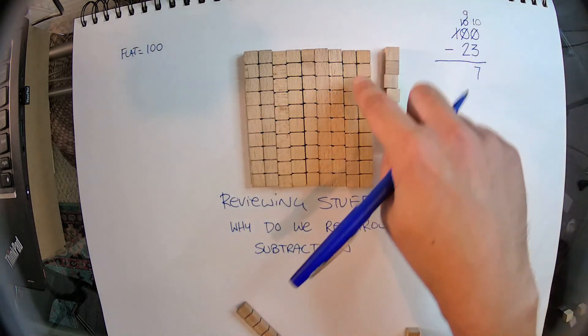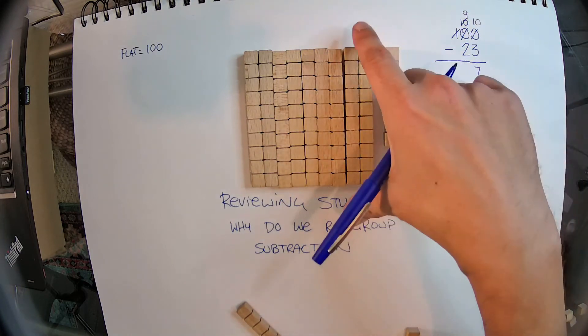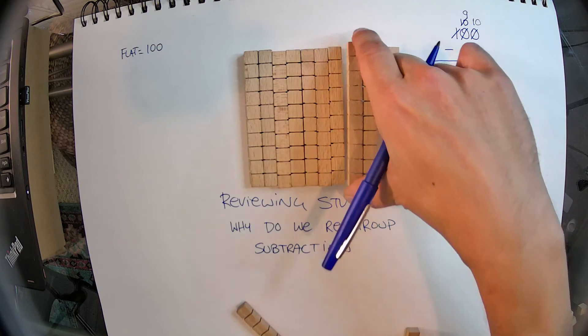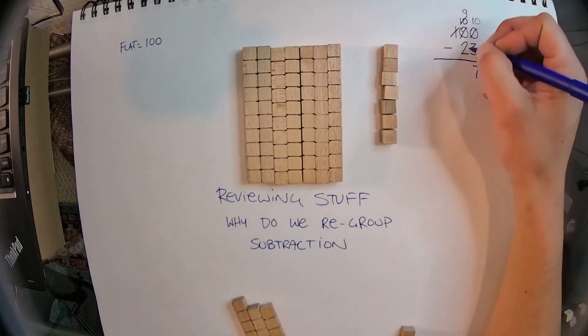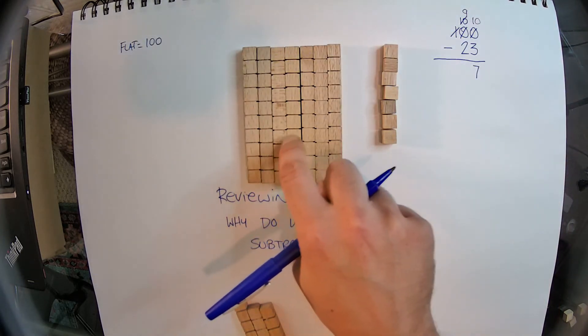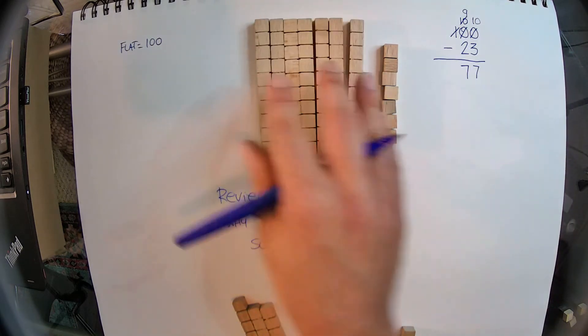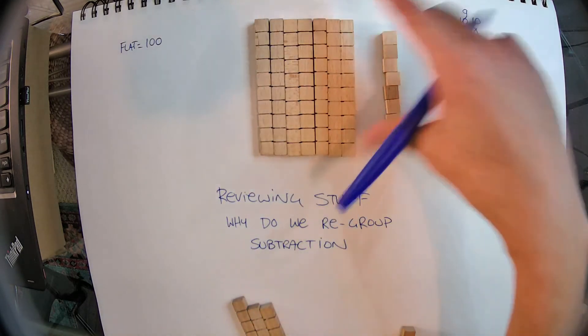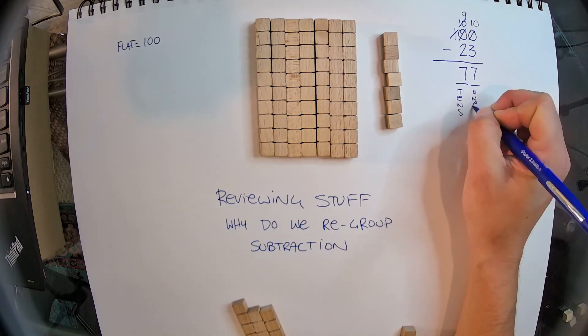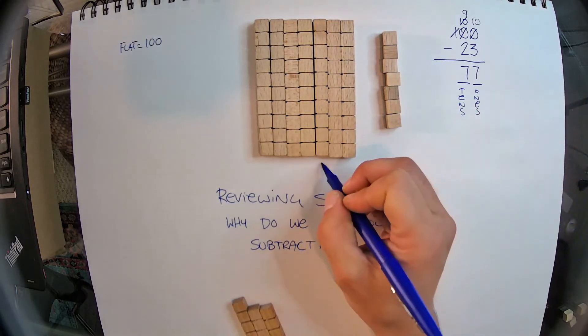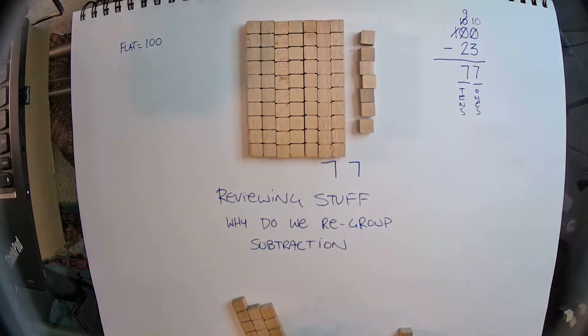Now, can I take 2 of these tens away from the 9 tens? I can. That's taking 20 away. So 9 minus 2 equals 7. So I have 7 tens and 7 ones. There's a 7 in the tens place. There's a 7 in the ones place. So my number is 77, 7 tens and 7 ones.